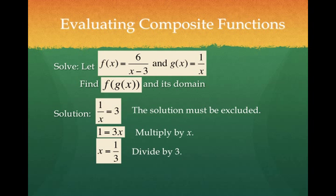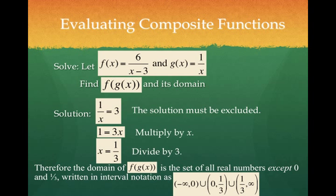g of x cannot equal 1 third. So what does that mean for my domain under the composition? I cannot have 0.